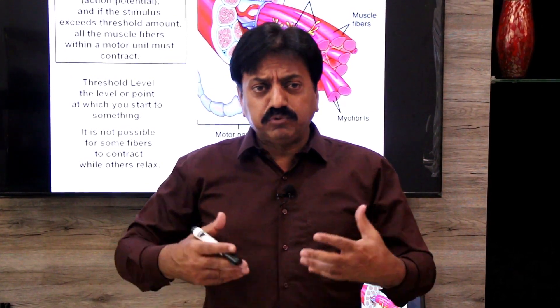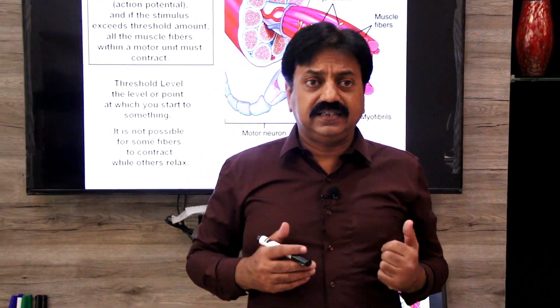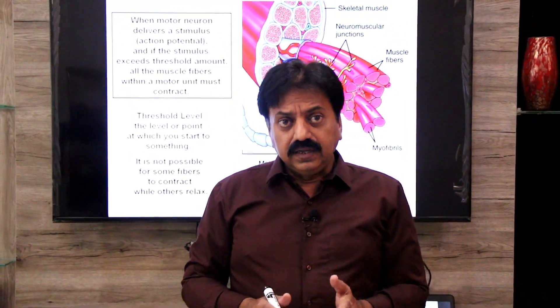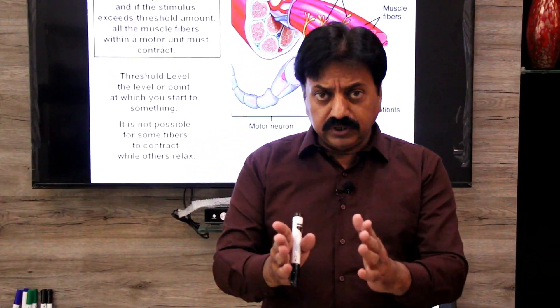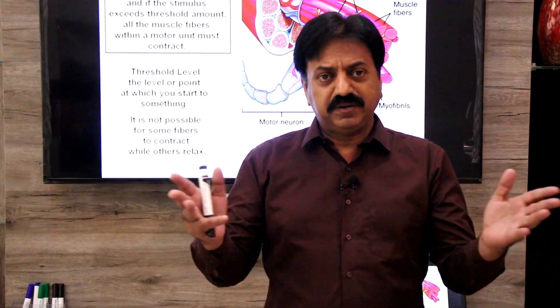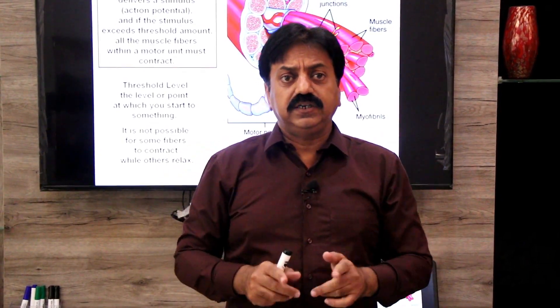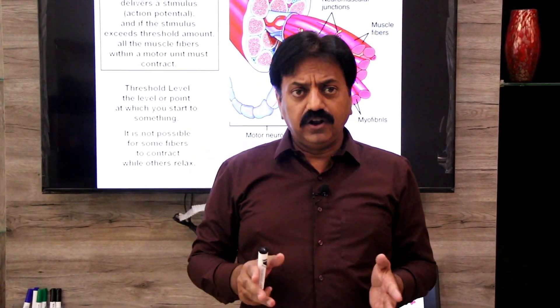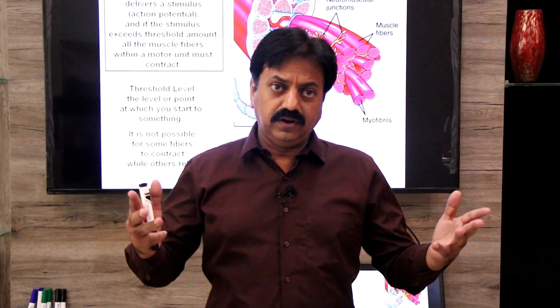Remember: a single muscle fiber obeys All or None Law. A motor unit also obeys All or None Law. But the whole skeletal muscle does not obey All or None Law. A single muscle fiber can obey All or None Law. A single motor unit can also obey All or None Law. But the whole skeletal muscle does not obey All or None Law.